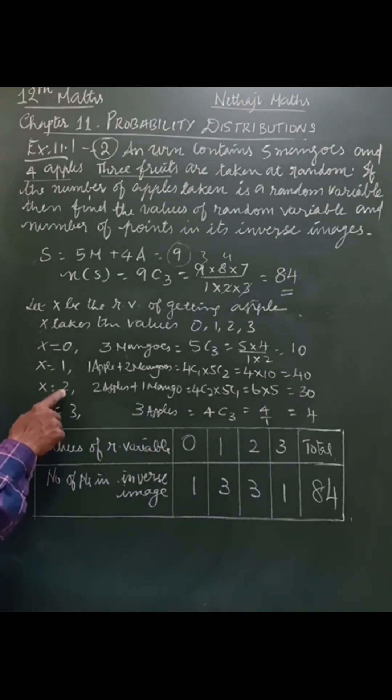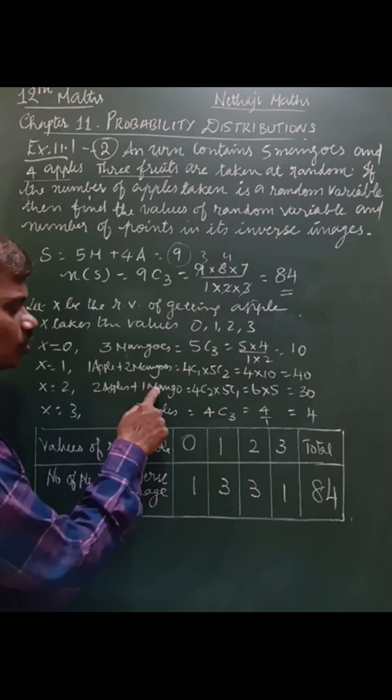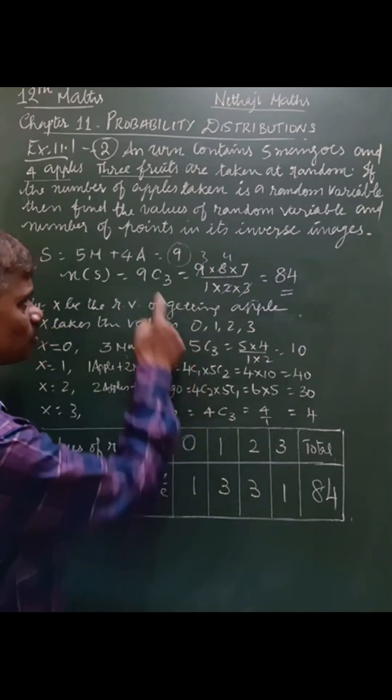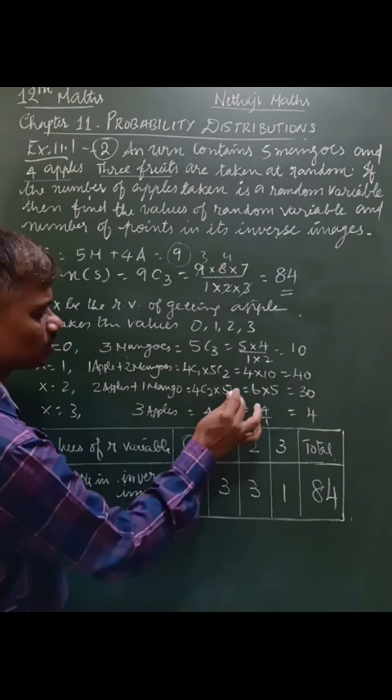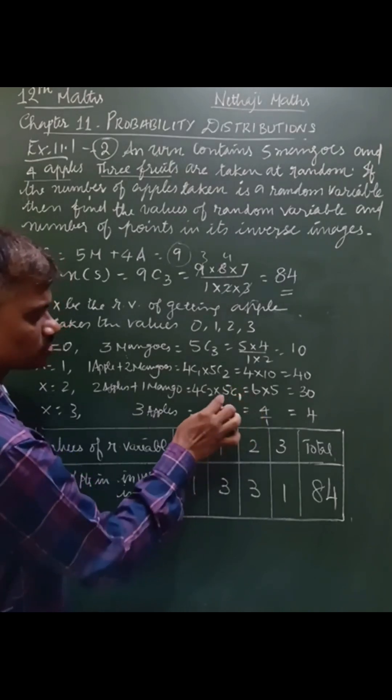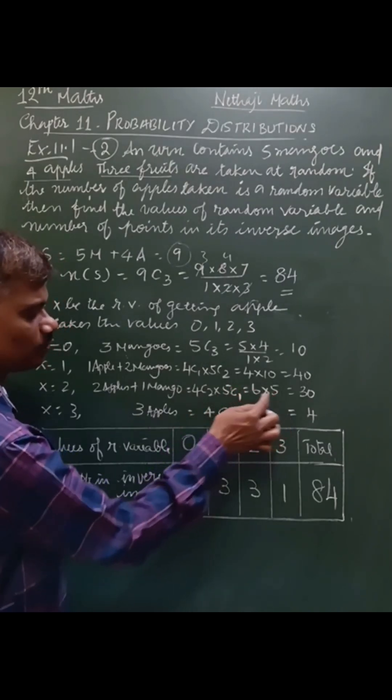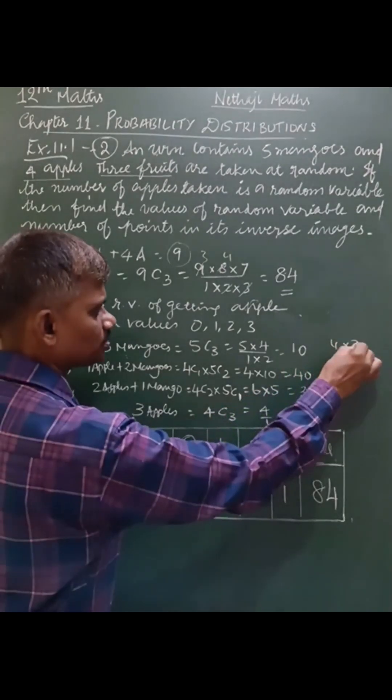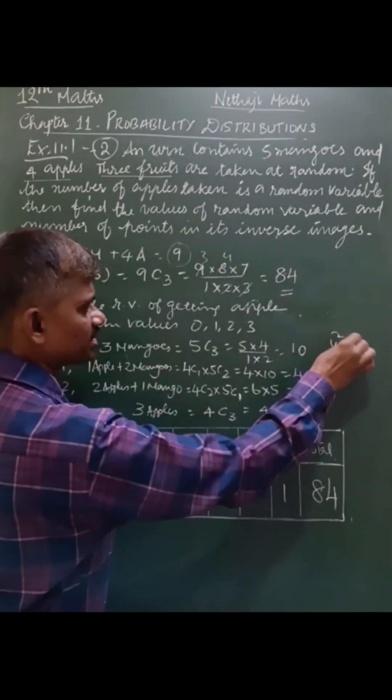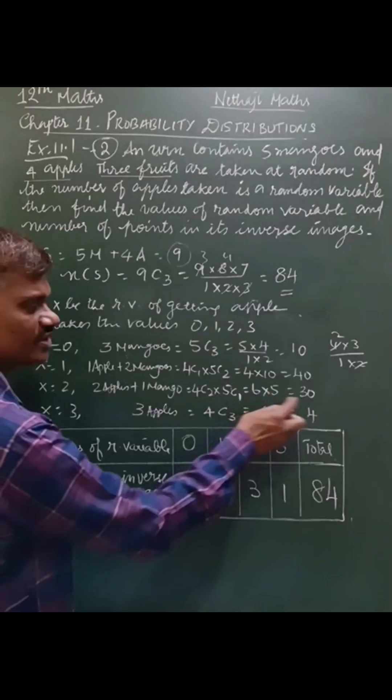Like that, x equals 2: 2 apples and 1 mango. So 4C2, out of 4 apples, and out of 5 mangoes I have to select 1 mango. So 5C1. 5C1 would be 5. 4C2 would be 6, that is 4 times 3 by 1 times 2. 6 times 5 is 30.